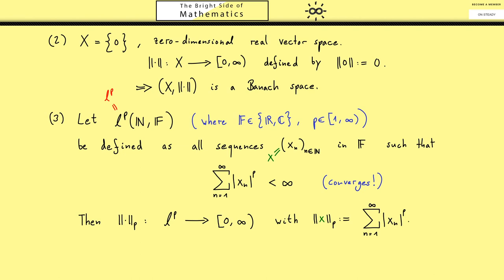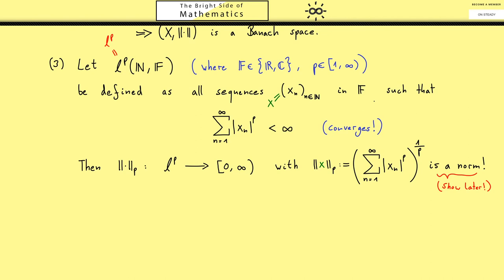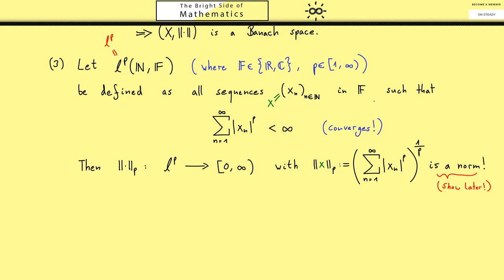However you might already see that the second property of a norm is not fulfilled in this case. We also need the pth root outside. If you set p equals to 2 you will recognize something similar to the Euclidean norm in R^d. Indeed with similar arguments we can show that this now gives us a norm. I emphasize that this is not trivial to show and indeed I skipped that here, but we will do it later. Here in this video I want to focus how we get the completeness of the space.